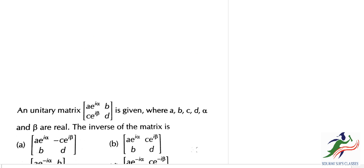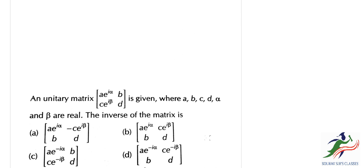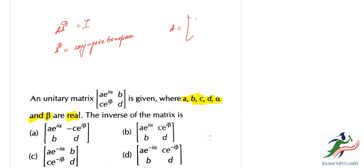Moving on to the next question on unitary matrices, where a, b, c, d, alpha, and beta are given to be real. The inverse of the matrix is asked. We know that A times A-dagger equals I, where A-dagger is the conjugate transpose.